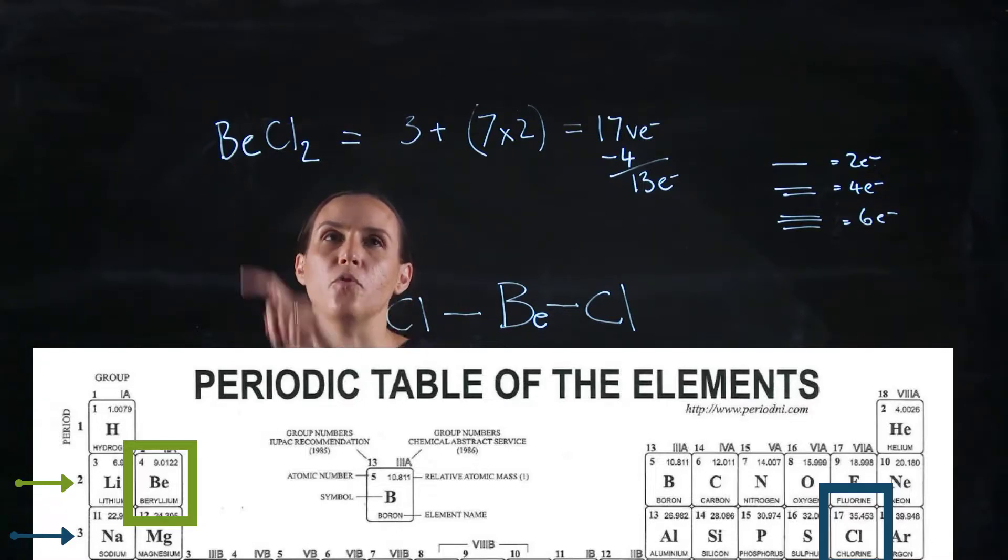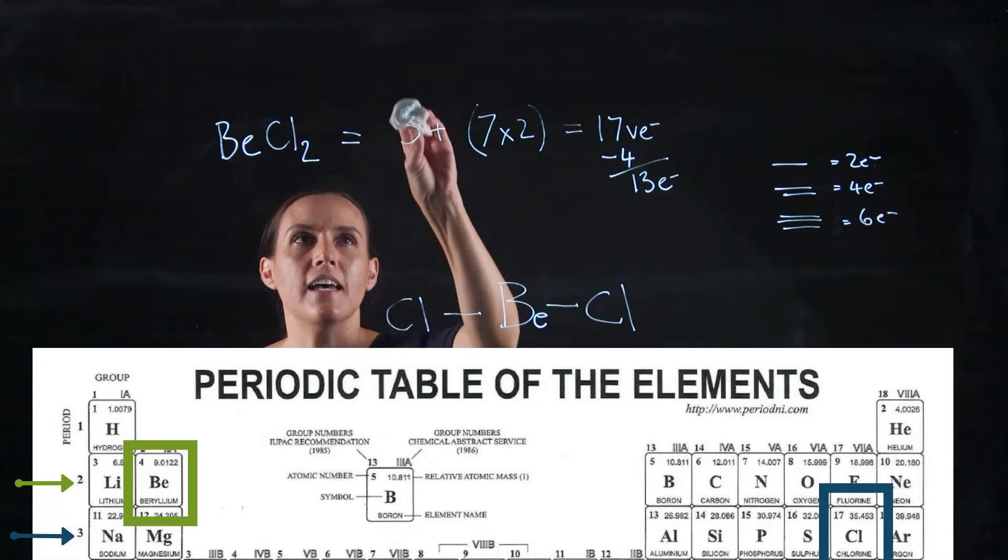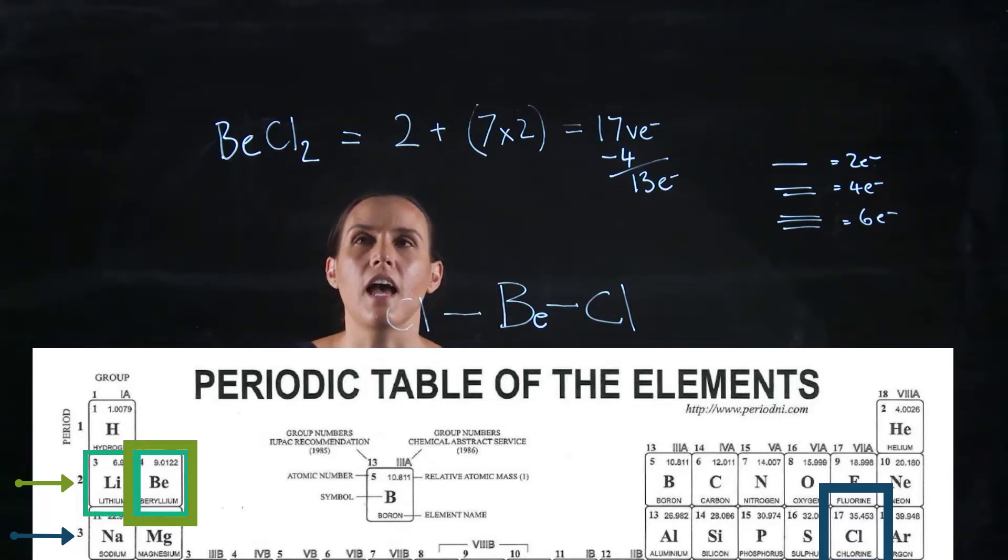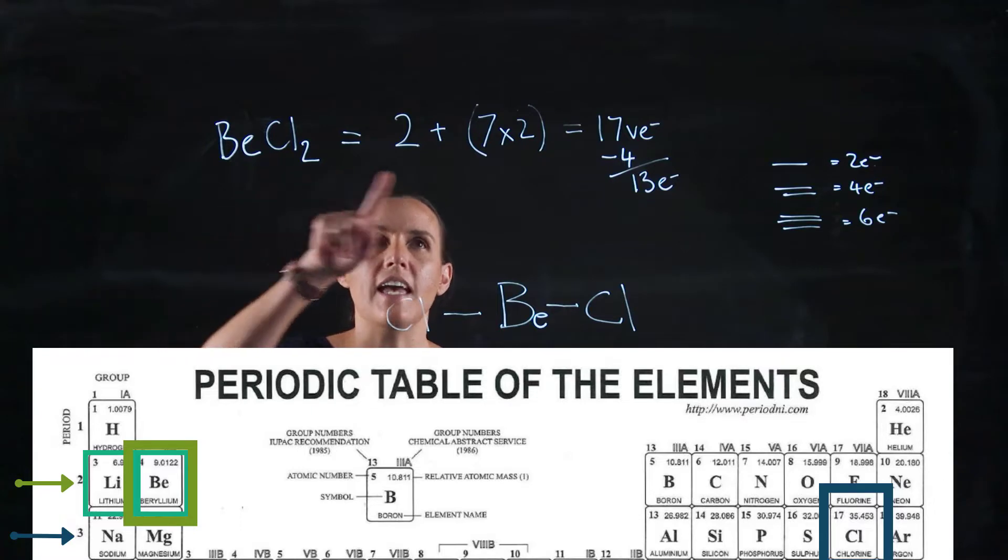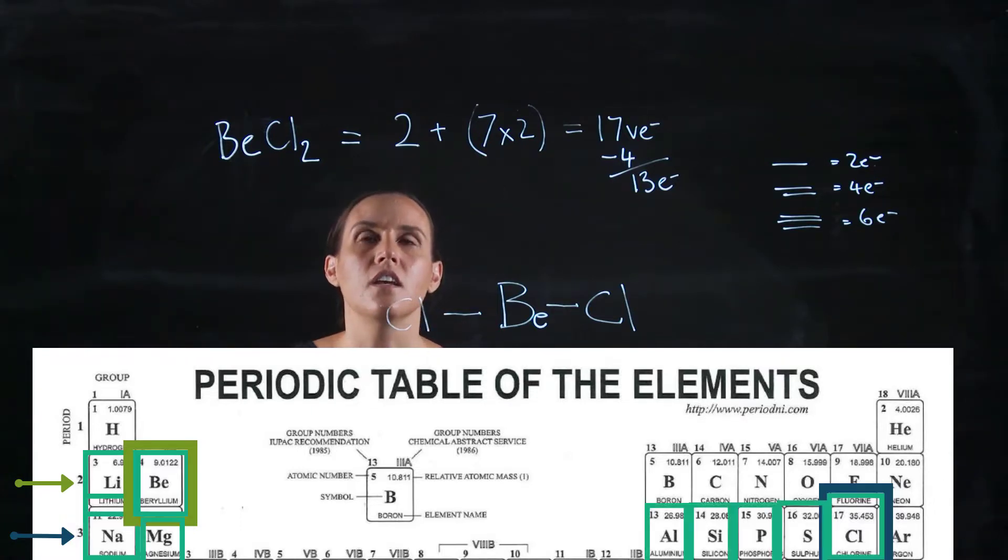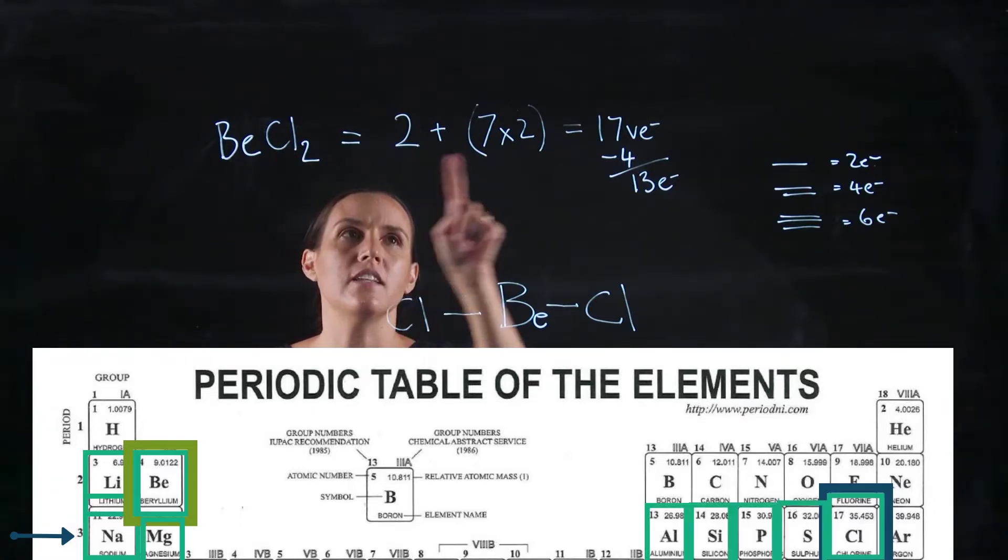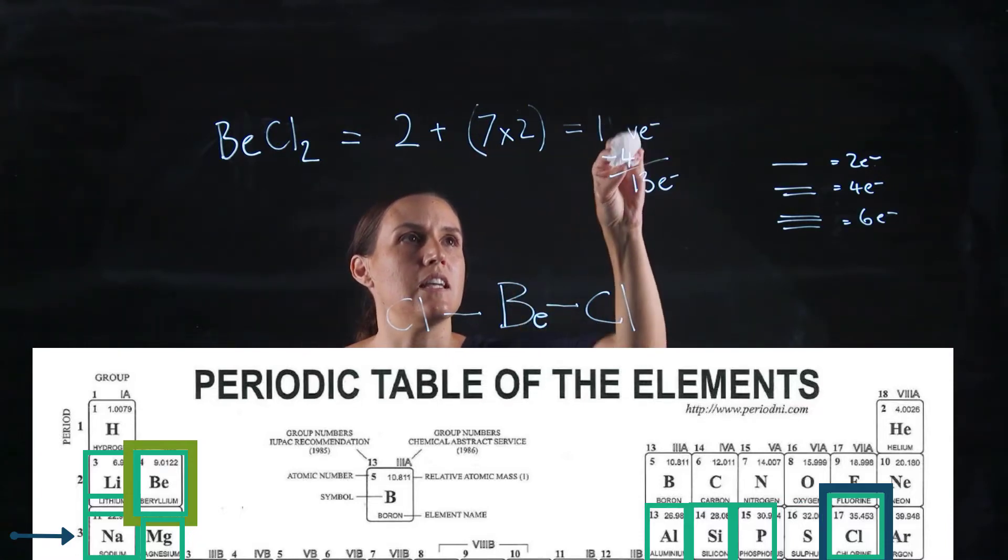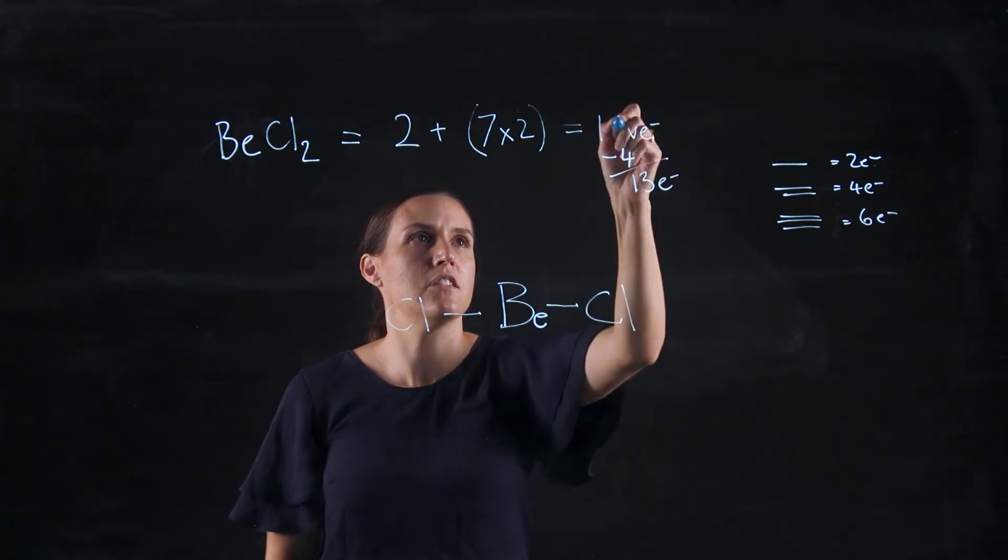So we've got beryllium. Beryllium has two valence electrons. And chlorine, being a halogen, has seven valence electrons. So we've got two chlorines, so it will be two multiplied by seven, which would give us 16 valence electrons in total.